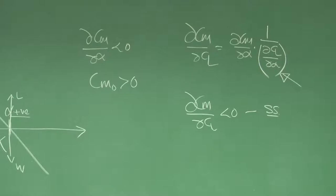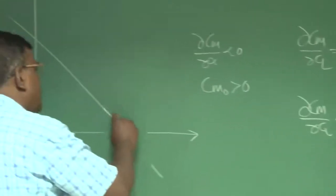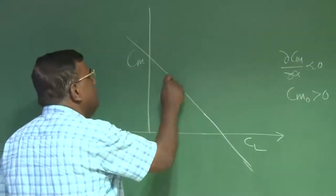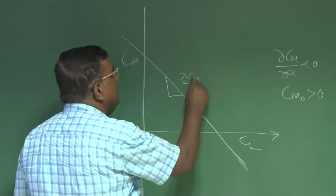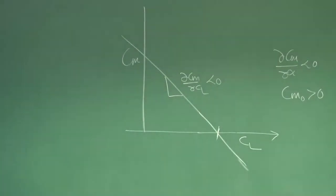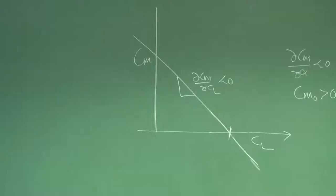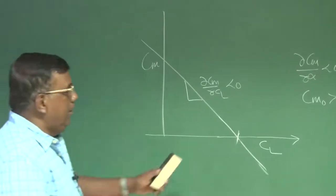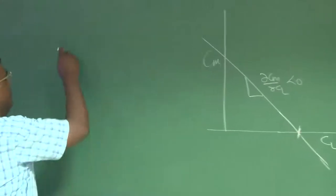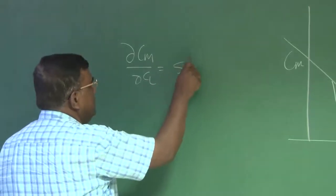Now, what we do is pretty simple. A designer will prefer to have Cm versus Cl graph like this, and the slope is dCm by dCl. It should be less than 0 at trim. When I'm talking about stability, I'm talking about a trim point. When I'm talking about stability, I'm talking about a slope about the equilibrium, about the trim. You also recall that approximately we could write dCm by dCl equal to static margin.